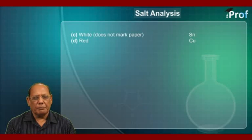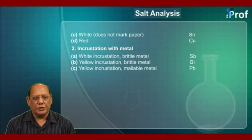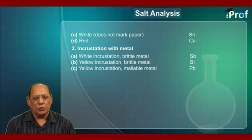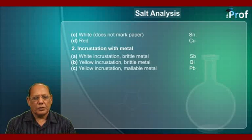Number 2: Incrustation with metal. A. White incrustation, brittle metal — antimony is present. B. Yellow incrustation, brittle metal — bismuth is present. C. Yellow incrustation, malleable metal — lead is present.